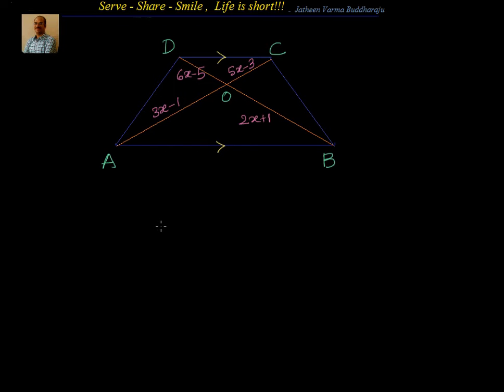We have been given that ABCD is a trapezium. Obviously, we know AB parallel to CD. We have been given different parts of the diagonals in terms of X. We have to find out the value of X.